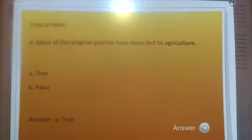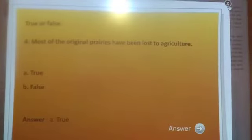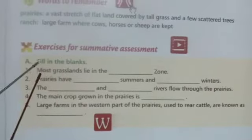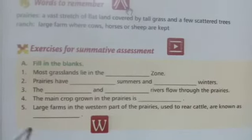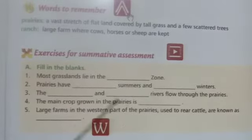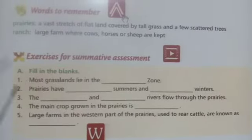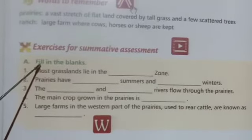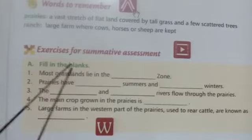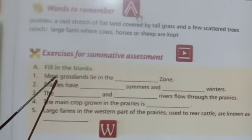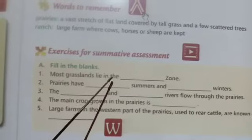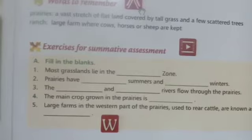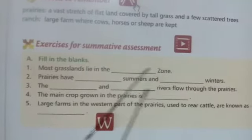Now we are going to discuss the book exercise. Are you ready, children? You have to take note of these questions. Fill in the blanks — I hope you all have your textbook. Just see your textbook and write the questions also. First question: most grasslands lie in the — zone. What is your answer? Temperate zone. This is the correct answer.